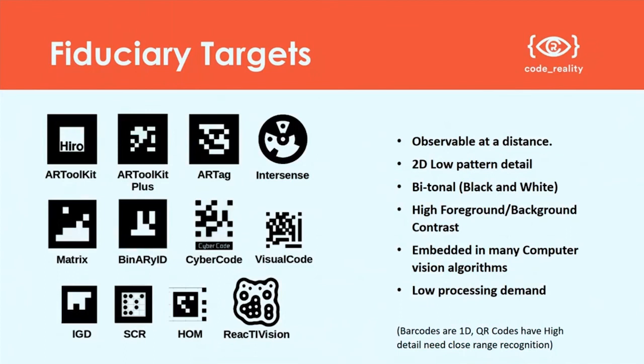Barcodes are often thought to fall into this family of fiduciary markers, but they're not — one reason is because they're one-dimensional. The two-dimensional versions, typically QR codes, tend to have a high number of dots inside them, so you need to be pretty close to recognise them. They're not really good for long-distance augmented reality, which is why they're not used in the way that fiduciary targets are.